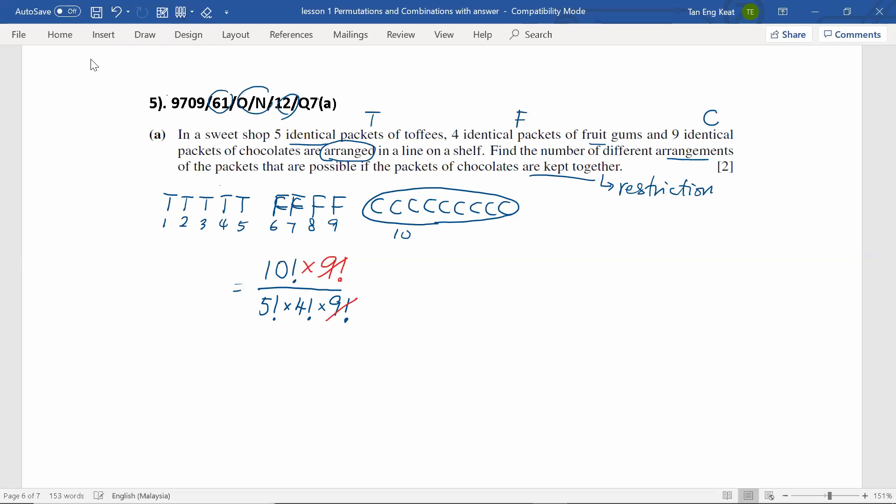So, towards the end, the number of ways for the arrangements of these packets of toffee, fruit gums and chocolates on the shelf is given by this. And by using calculator, the answer is 1260.